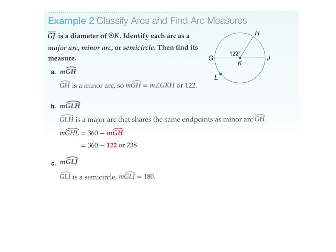So here is an example two. You're classifying the arcs and finding the measure. Well, first of all, GH. So this is this section here. It's going from G to H. So it's less than 180 degrees because it tells you it's 122. So it's a minor arc, 122 degrees.